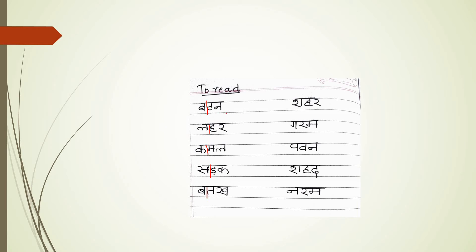Button, Leher, Kamal, Sadak, Badak, Shahar, Garam, Pawel, Shahad, Naram. Okay, so — Button, Shahar, Lahar, Garam, Kamal, Pawel, Sadak, Shahad, Badak, Naram.